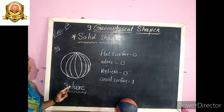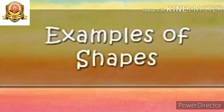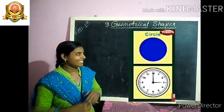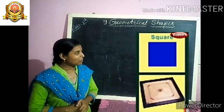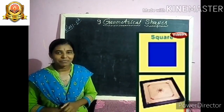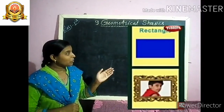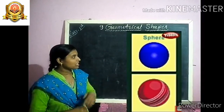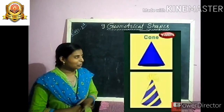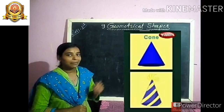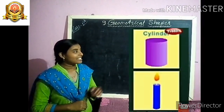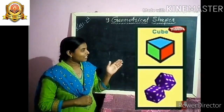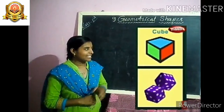The spelling of sphere is S-P-H-E-R-E, sphere. Now let me show you some examples of shapes in real life. The shape of a clock is like a circle. The shape of a carom board is like a square. The shape of a photo frame is like a rectangle. The shape of a ball is like a sphere. The shape of a birthday cap is like a cone. The shape of a candle is like a cylinder. The shape of a dice is like a cube.